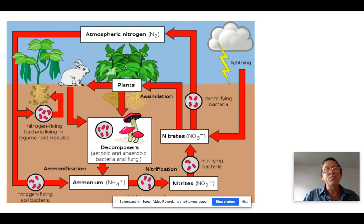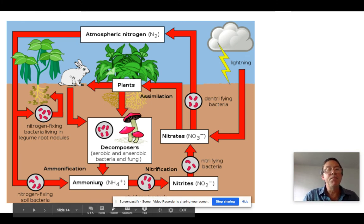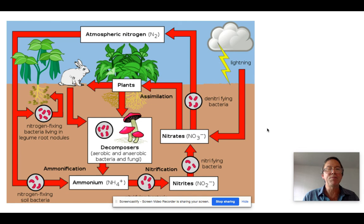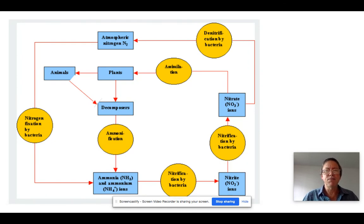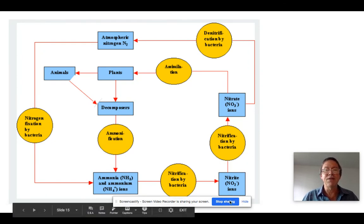When plants die, or the rabbit dies, or a rabbit releases urine or feces, these materials have nitrogen in them. Aerobic and anaerobic bacteria and fungi break down those nitrogen compounds and turn them into ammonium. Some of that ammonium can be directly assimilated by plants; the rest goes through nitrification and gets turned into nitrates. There's also a simpler flowchart diagram showing this same cycle. So that's the nitrogen cycle — it's approachable, I think you guys will figure it out.